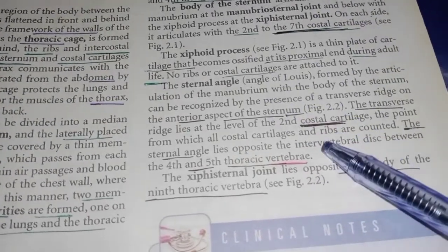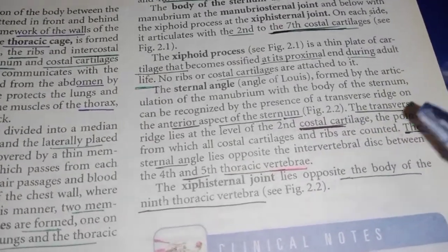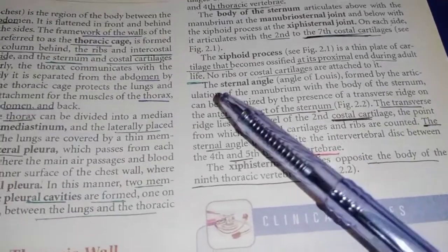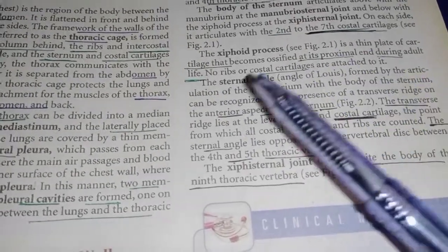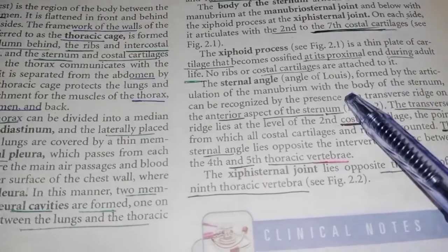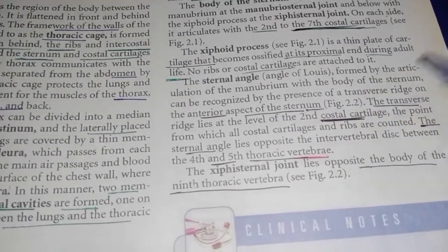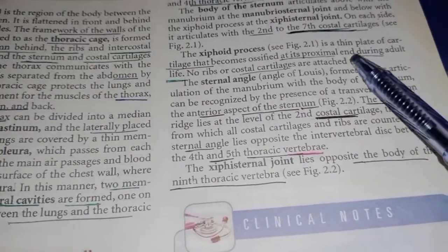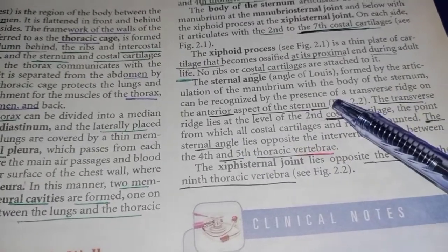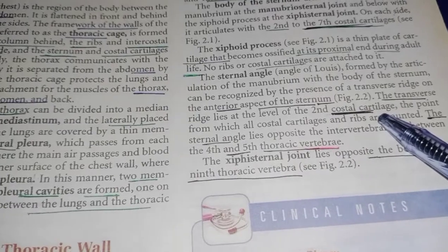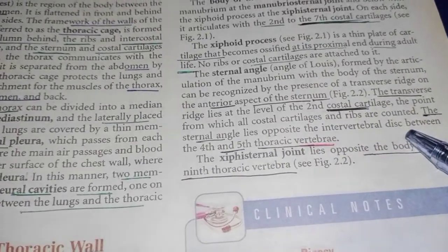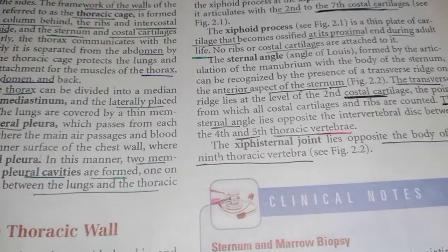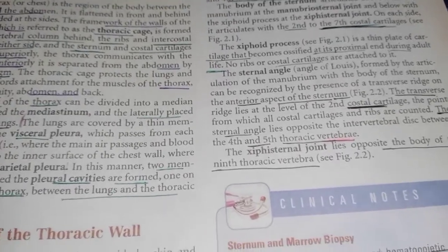The most important landmark is the sternal angle, also called the angle of Louis, which is formed by the articulation of the manubrium with the body of the sternum. The sternal angle lies at the level of the second costal cartilage. This is the point from which all costal cartilages and ribs are counted — this is the most important clinical significance of the sternal angle.